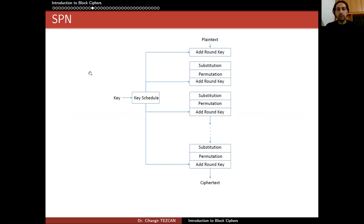I tried to draw a picture of what an SPN looks like. You have the plaintext block here. At the first layer, you have to combine it with the key. You have the key and the key schedule algorithm, which provides round keys. You combine your first round key with your plaintext block. Most of the time, we use simple operations like XOR here. Then the actual round starts, which consists of substitution, permutation, and again AddRoundKey.